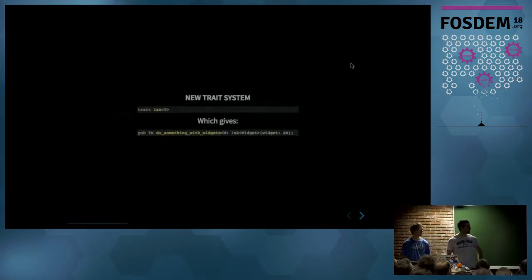So the new trait system is basically based on this one, isA. So now when you have a function, for example, for the widget, you take isAWidget, so every object which implements this trait can be used in this function.